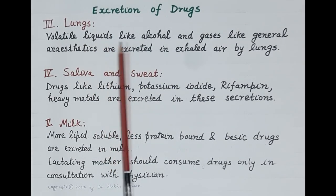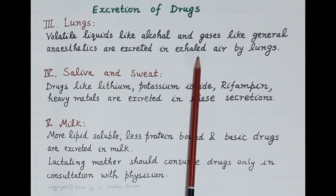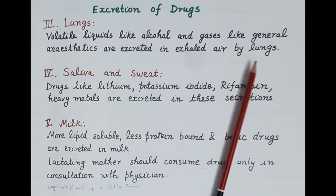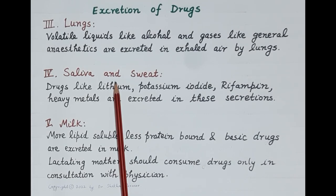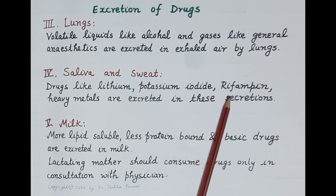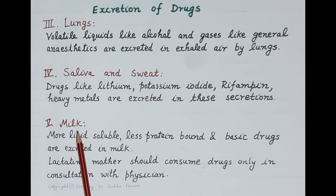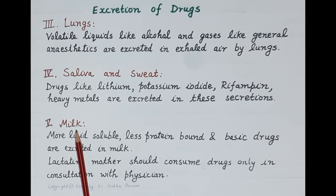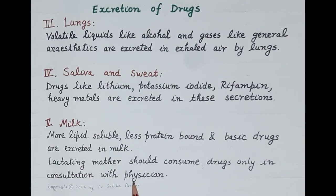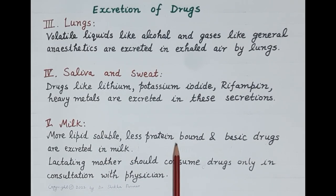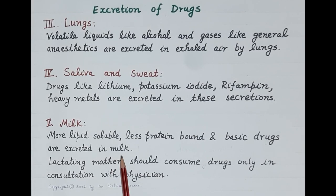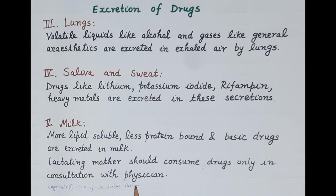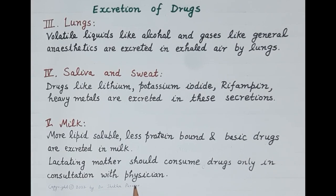Another route of excretion is the lungs — volatile liquids like alcohol and gases like general anesthetics are excreted in exhaled air. Saliva and sweat are minor routes; drugs like lithium, potassium iodide, rifampin, and heavy metals are excreted in these secretions. Excretion in milk can be harmful or toxic to the suckling infant, so lactating mothers should consume drugs only in consultation with a physician. More lipid-soluble, less protein-bound, and basic drugs are preferentially excreted in milk. This concludes the overview of the different routes of drug excretion.